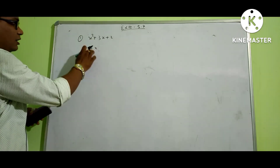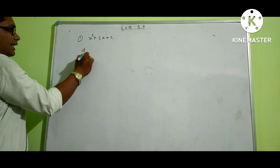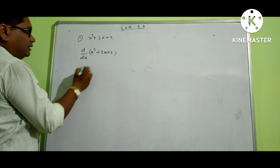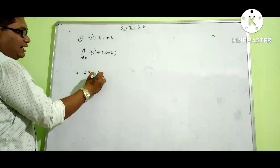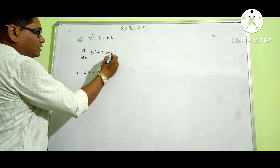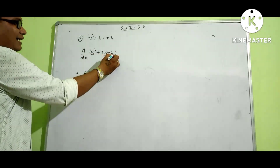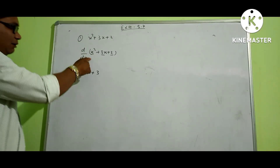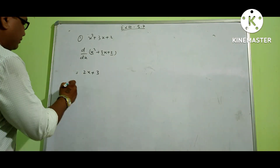This expression is not equal to its derivative directly. The first derivative of x² plus 3x plus 2 is found by differentiating each term: the derivative of x² is 2x, plus the derivative of 3x is 3, plus the derivative of the constant 2 is 0. So the first derivative is 2x plus 3.